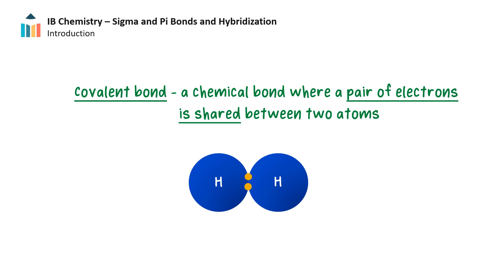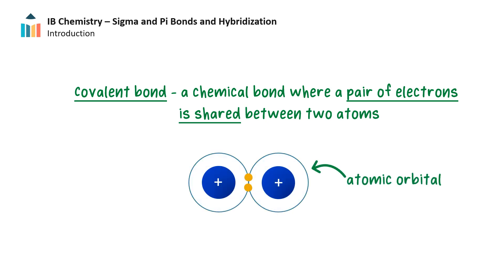We have learned a lot about covalent bonds, where a pair of electrons is shared between two atoms. Here we will investigate how the atomic orbitals within the atoms combine to form the covalent bond. We will also discuss how new types of atomic orbitals can form when they mix within an atom during bonding.